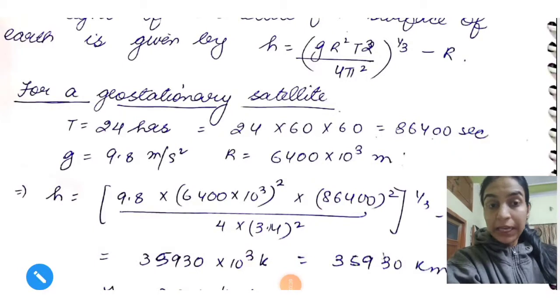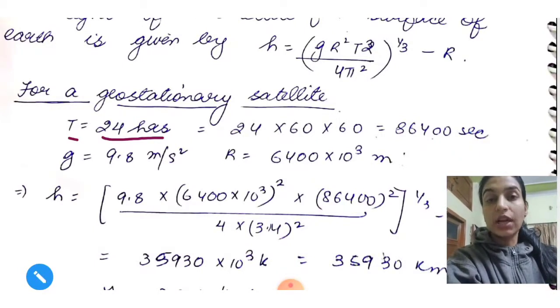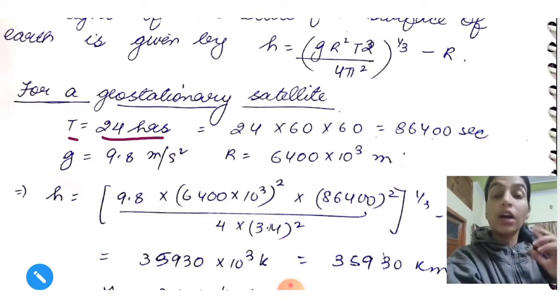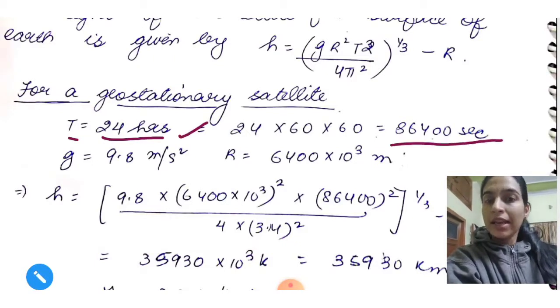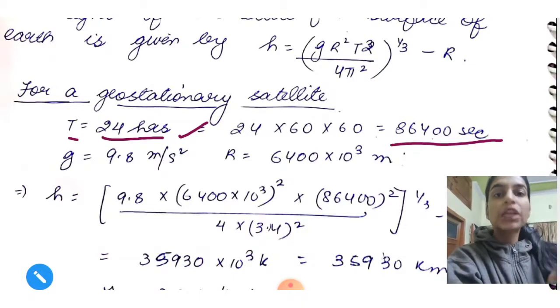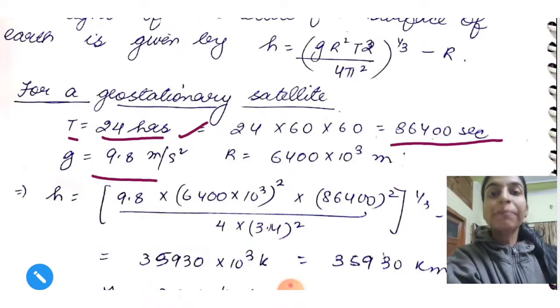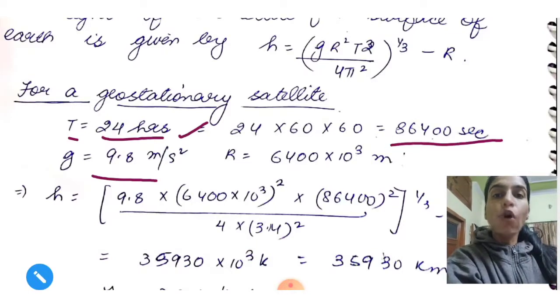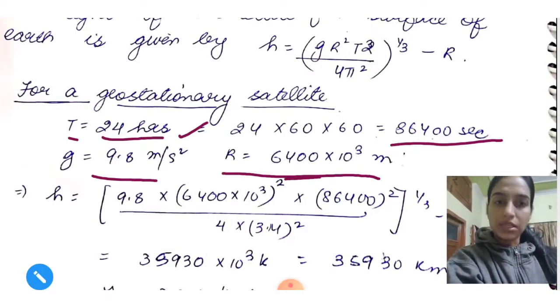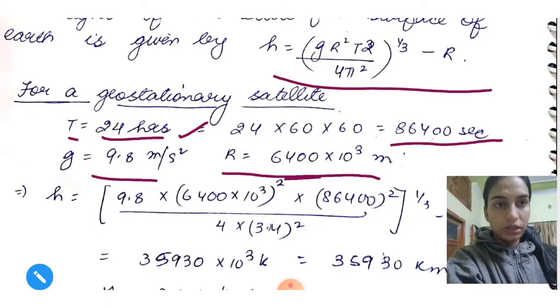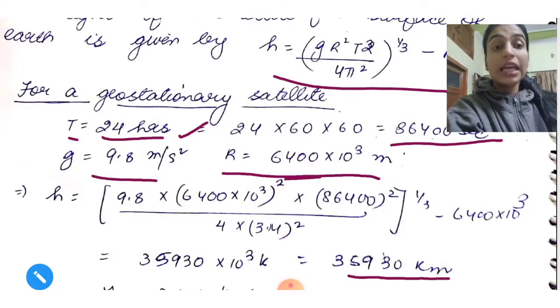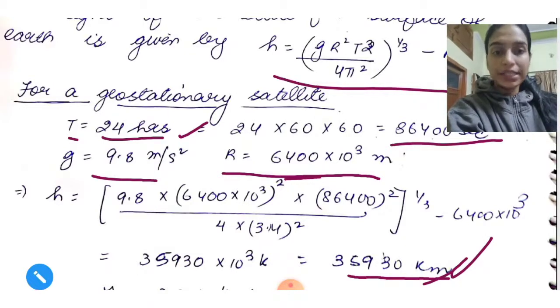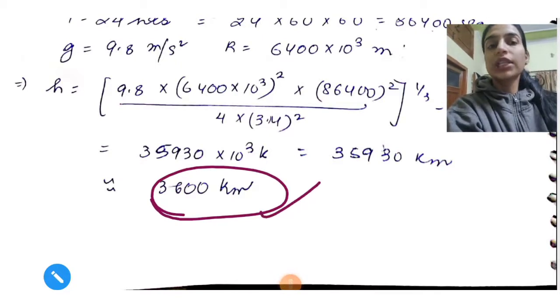Now for geostationary satellite, we know all these things. The time has to be 24 hours, because this was a prerequisite. We already said that our time period should be the rotation of the Earth's time period. So that is 24 hours. We will convert it to this unit. So it will come out to be 86400 seconds. So the height of a geostationary satellite is about 36,000 km.